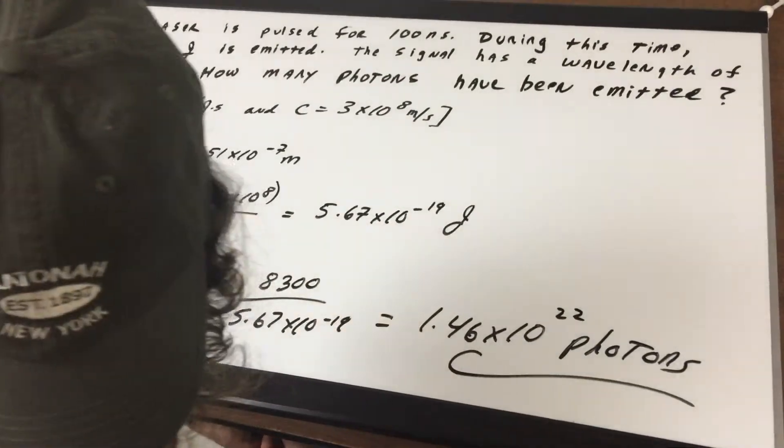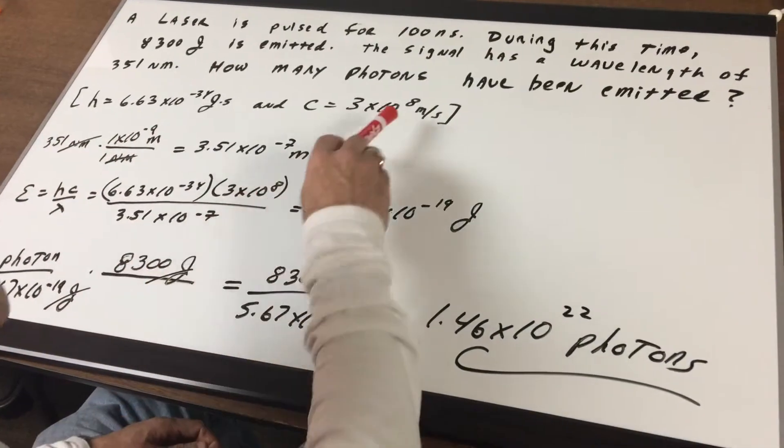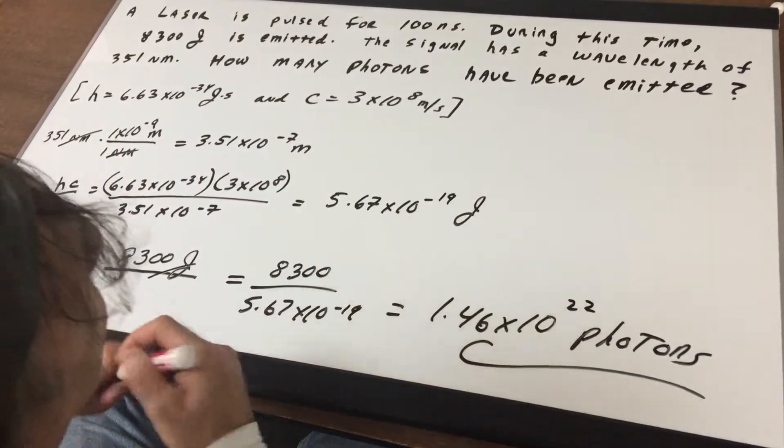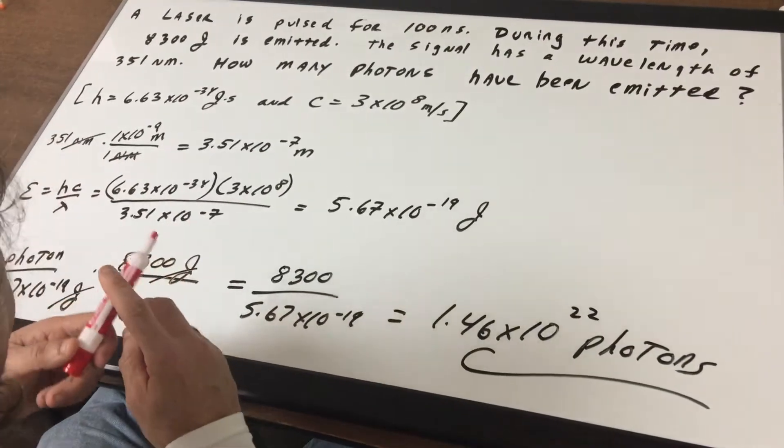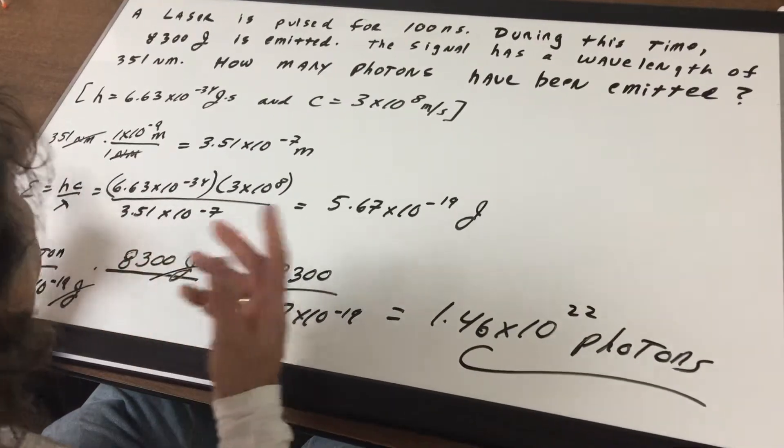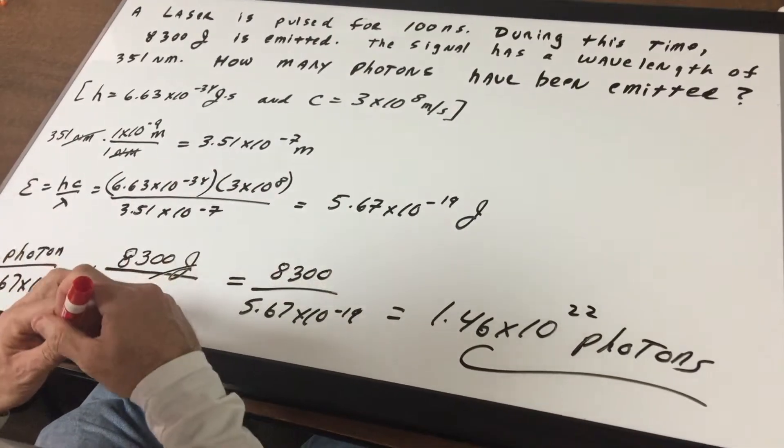Now the first thing I'm going to do is convert nanometers into meters, because the Planck's constant has got to be in meters. So when I did that and multiplied 351 by 10 to the minus 9, I get 351 to the minus 9, or 3.51 times 10 to the minus 7.